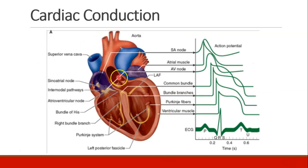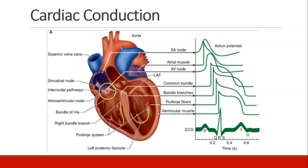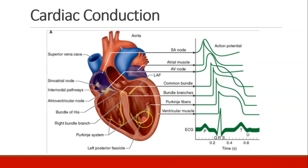Here's a diagram of what we've just discussed. The SA node is located in the right atrium, and it sends its impulses through the atria until we get to the AV node. The AV node then sends impulses down the bundle of Hiss and into the Purkinje system — the right and left Purkinje fibers.